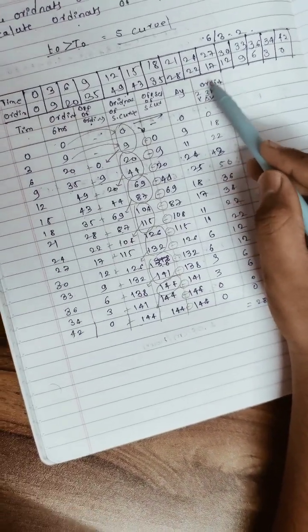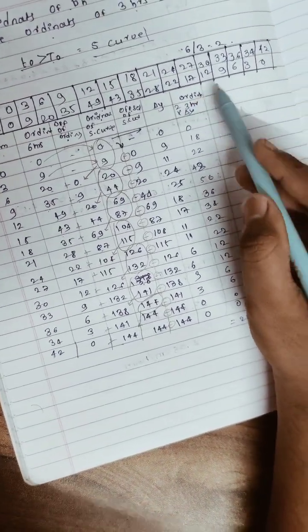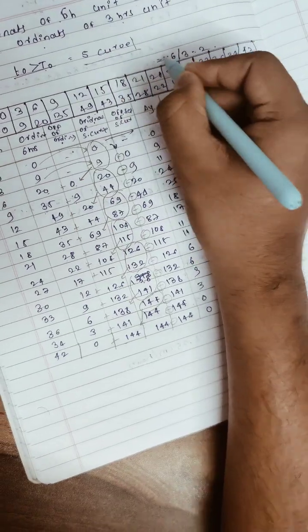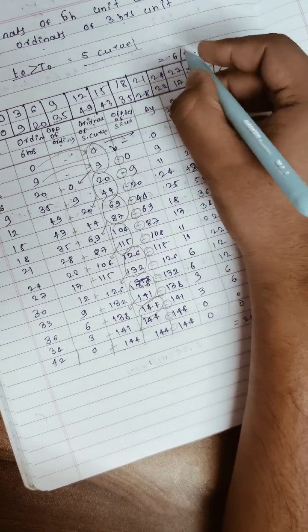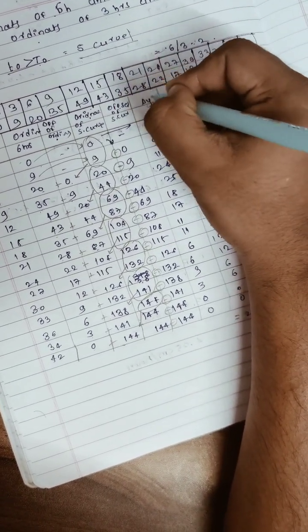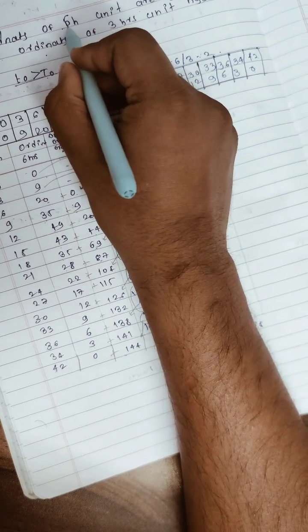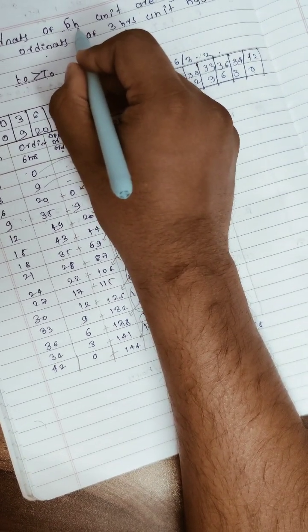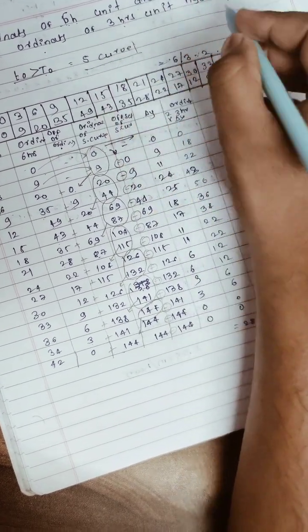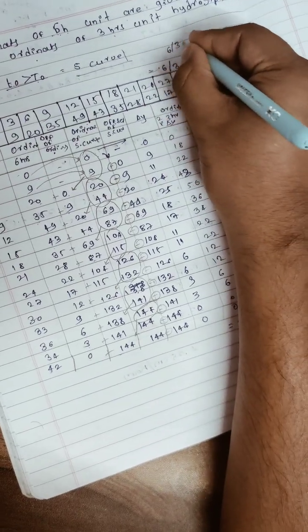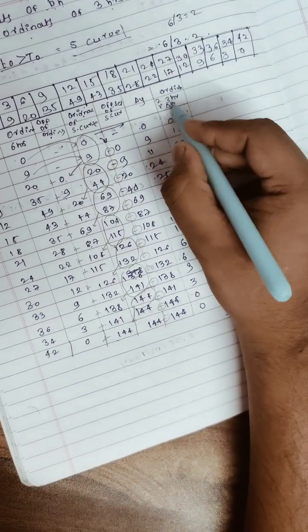Now when calculating ordinates for three hour unit hydrograph, we multiply delta y by a conversion factor. Since we're given six hour unit hydrograph and need three hour, we use 6 divided by 3 which equals 2. So multiply delta y values by 2: 0 times 2 is 0, 9 times 2 is 18.